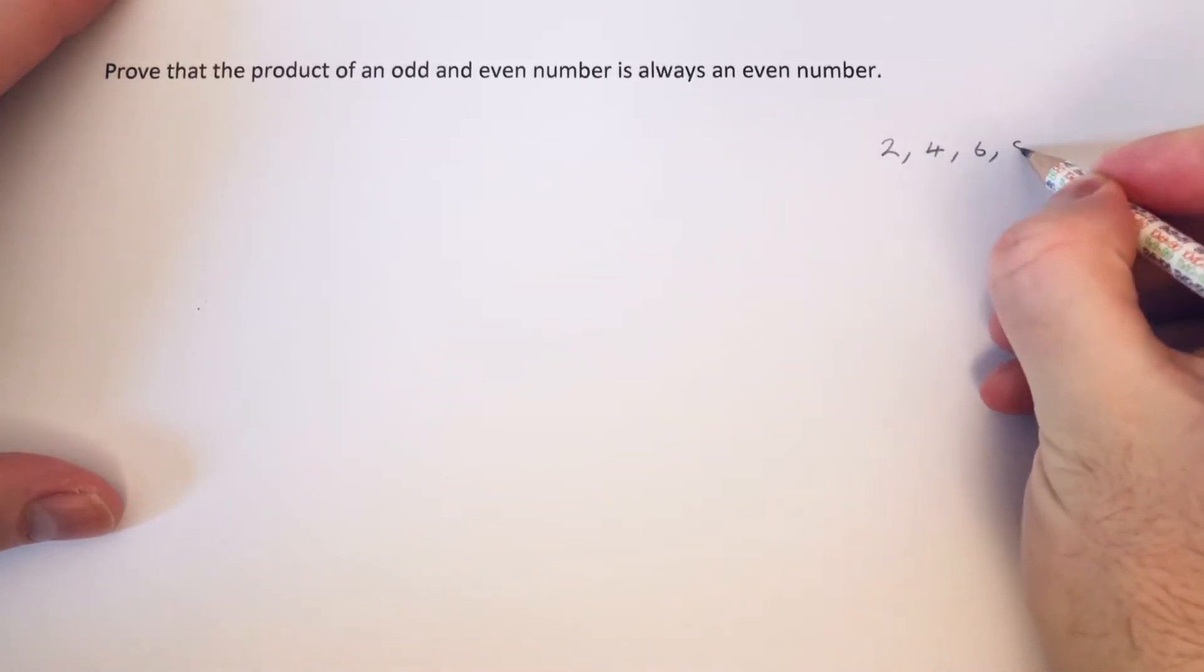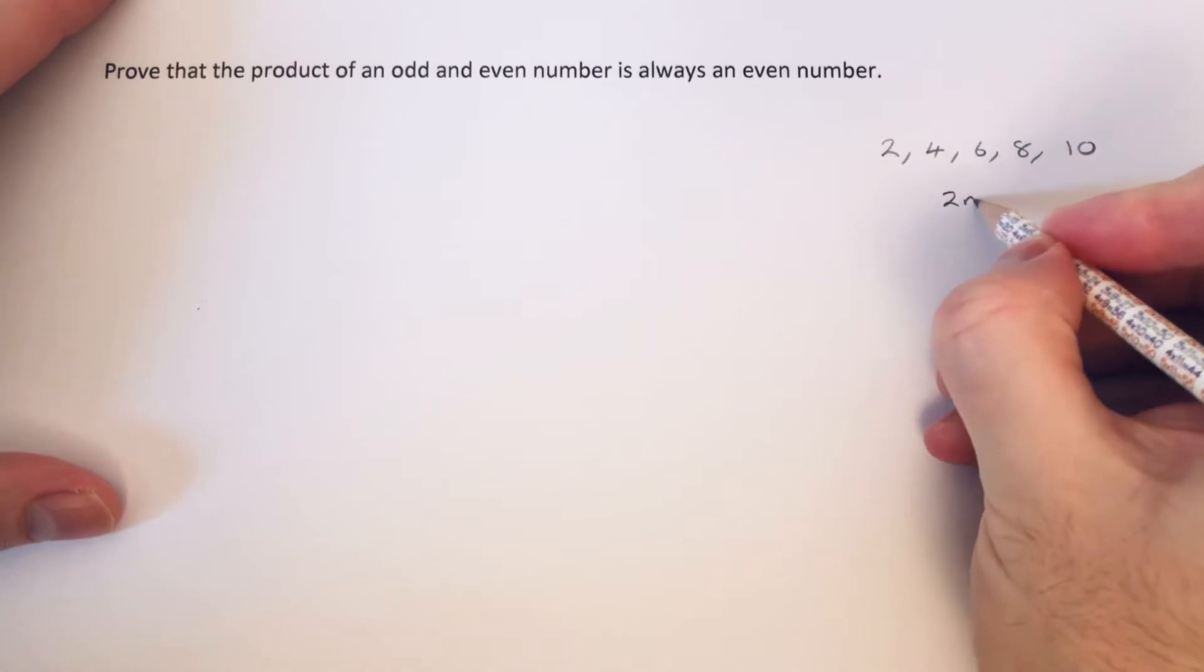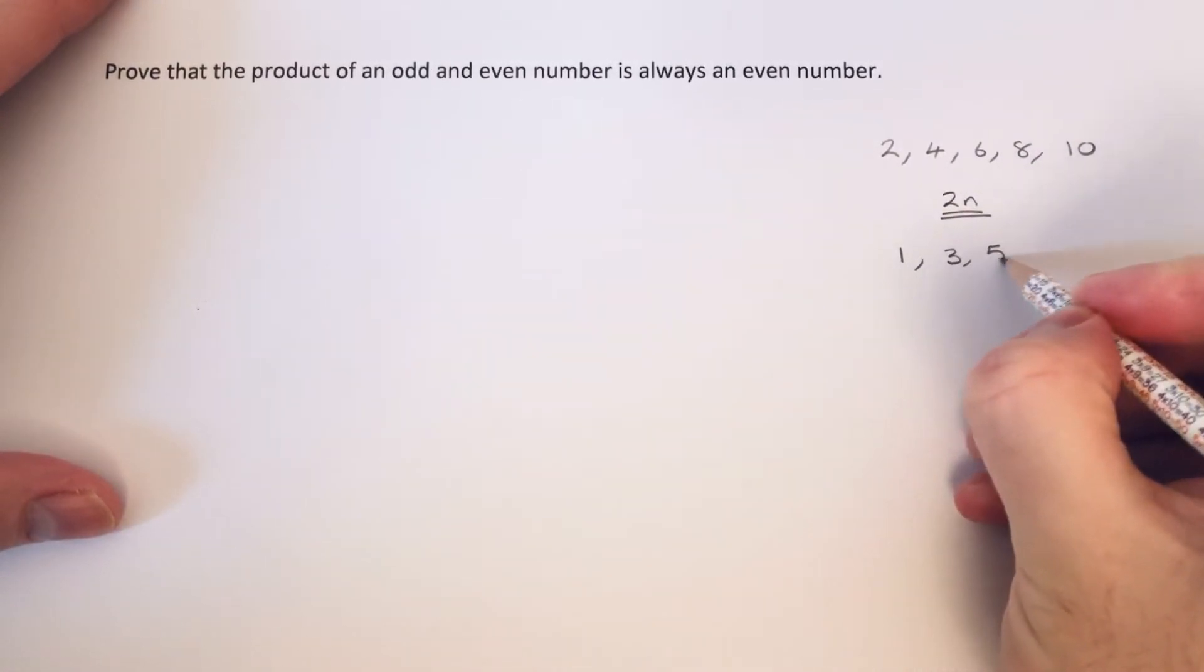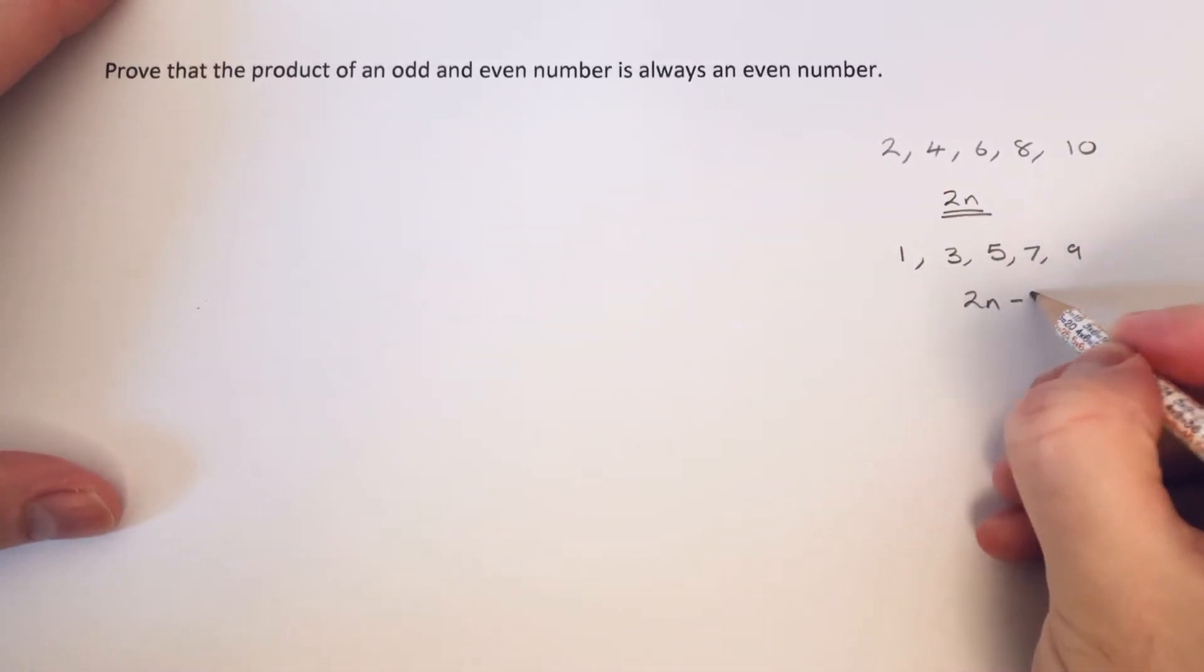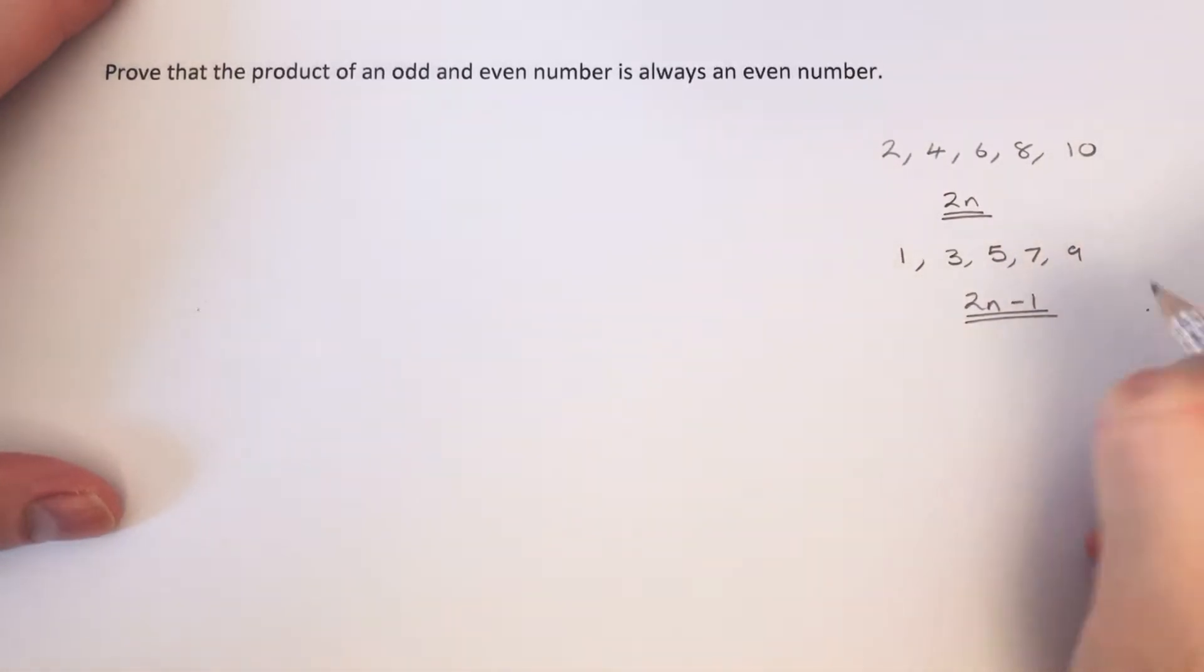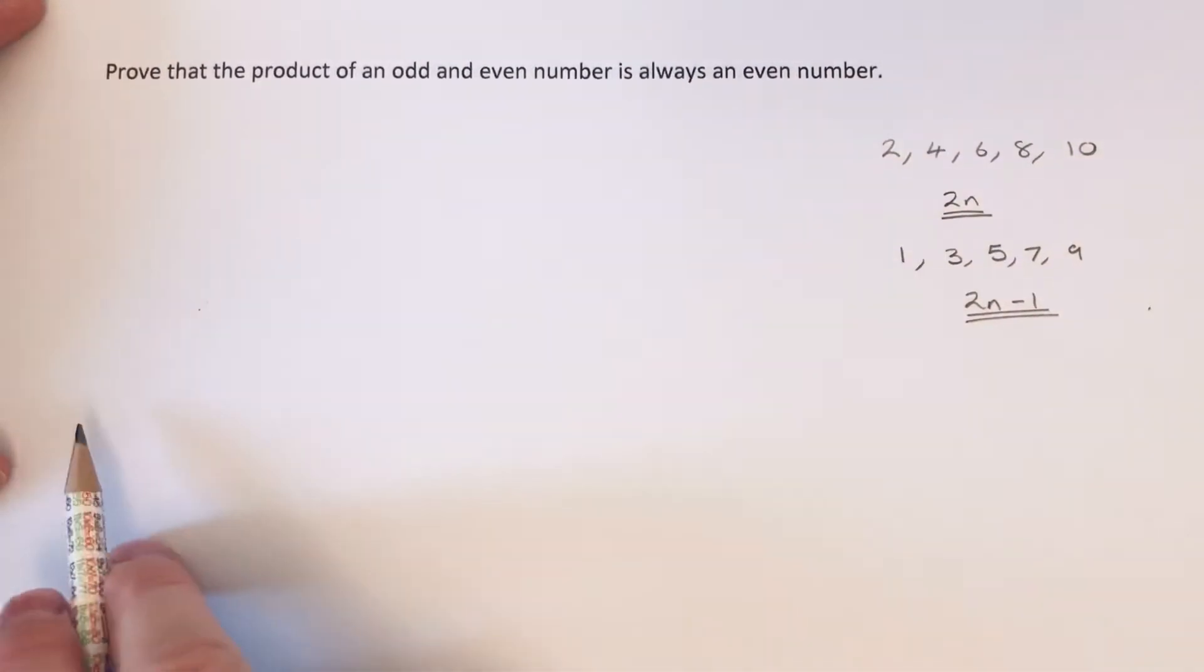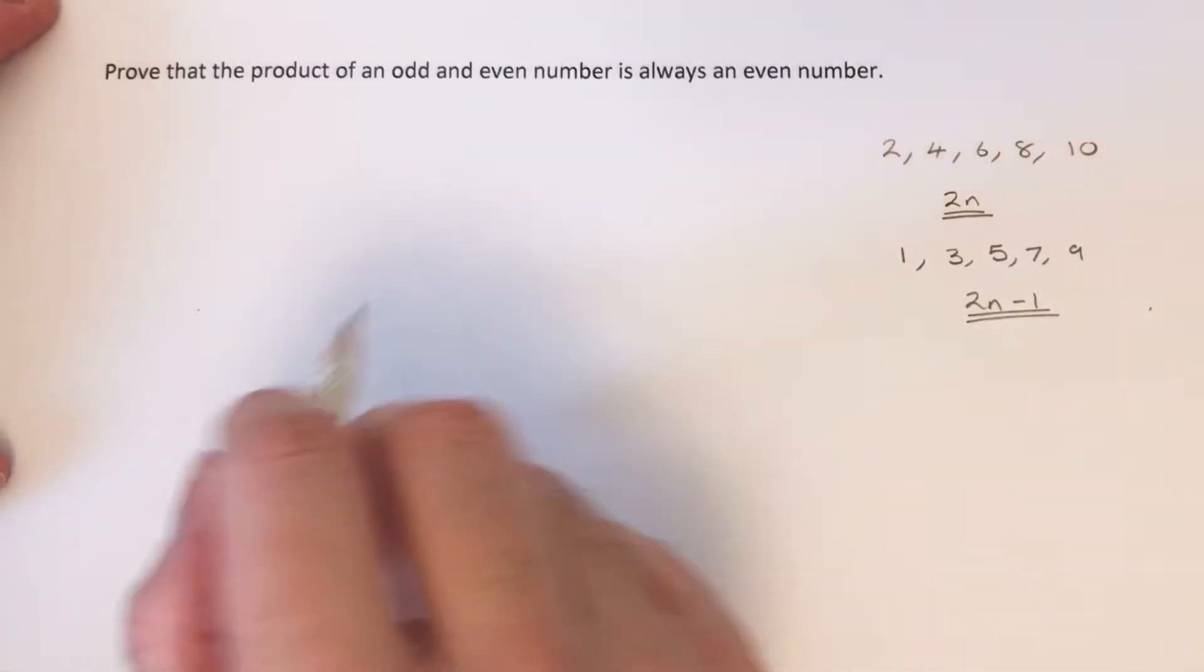Before you start, you need to know that an even number sequence has nth term of 2n, and an odd number sequence has nth term of 2n minus one. We're going to use these for this algebraic proof. We've got to prove that the product of an odd and an even number is always an even number.